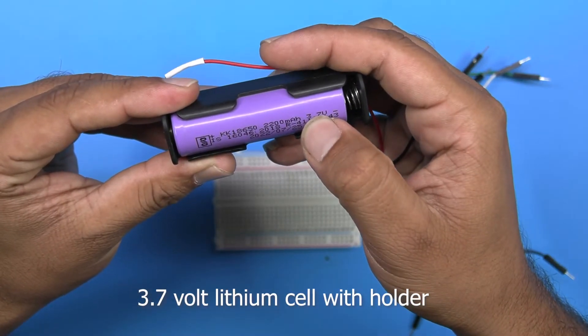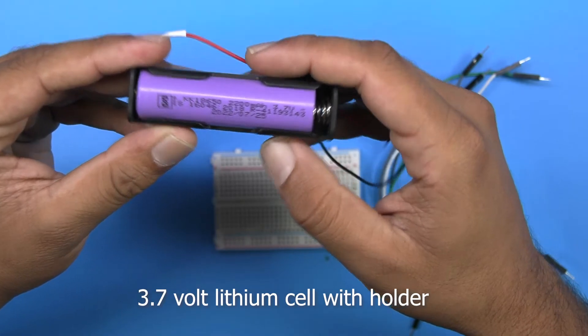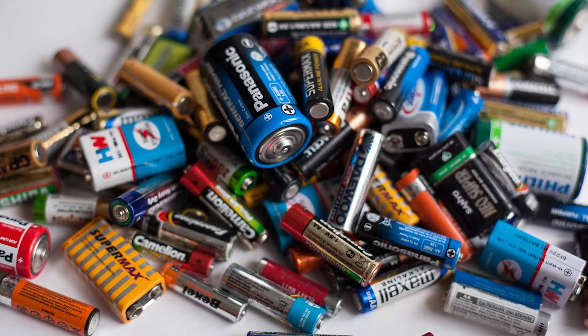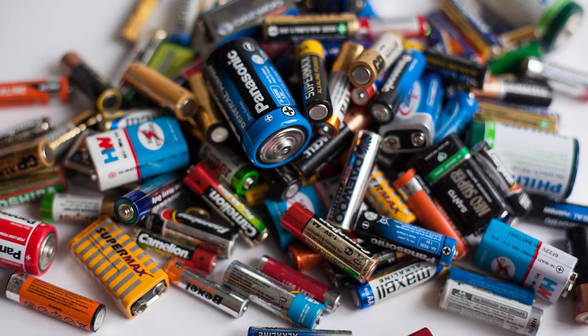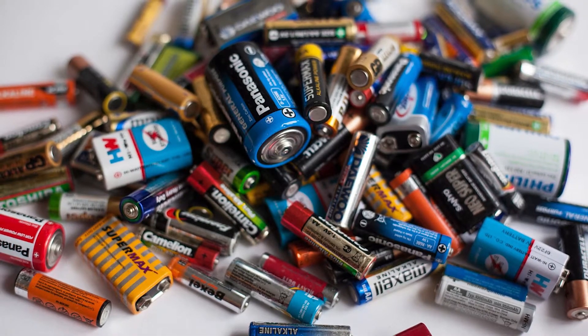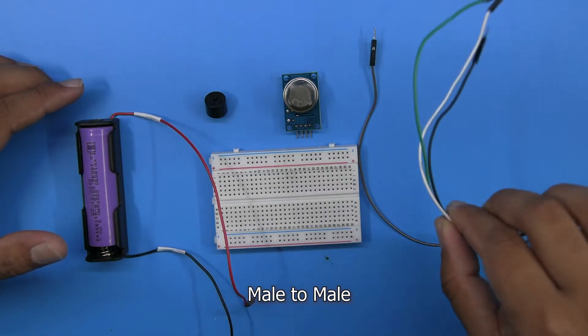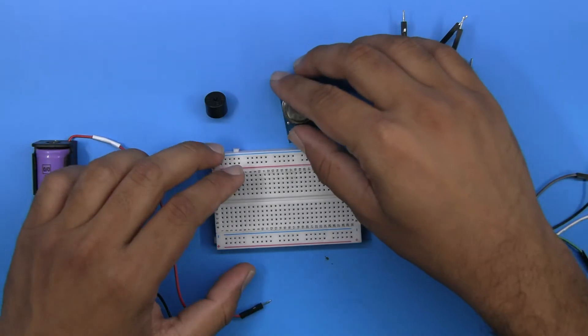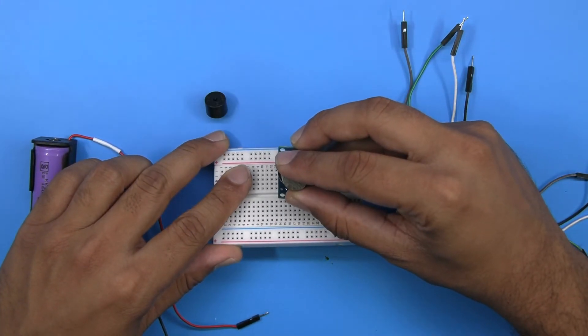For powering the circuit we have one lithium ion cell with holder. You can use any battery under 5 volts. Lastly we have some male to male jumper wires. So let's start building the project.